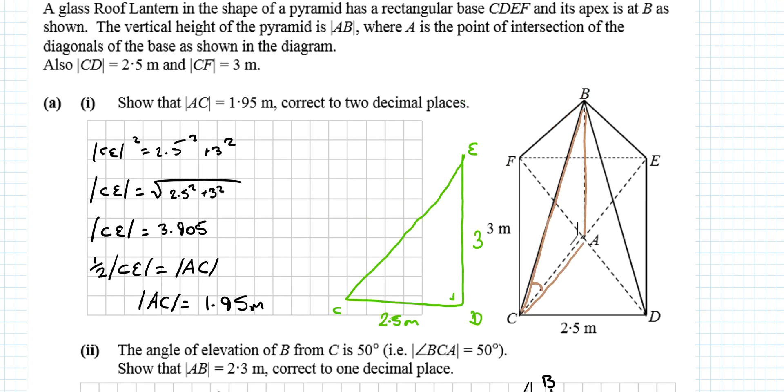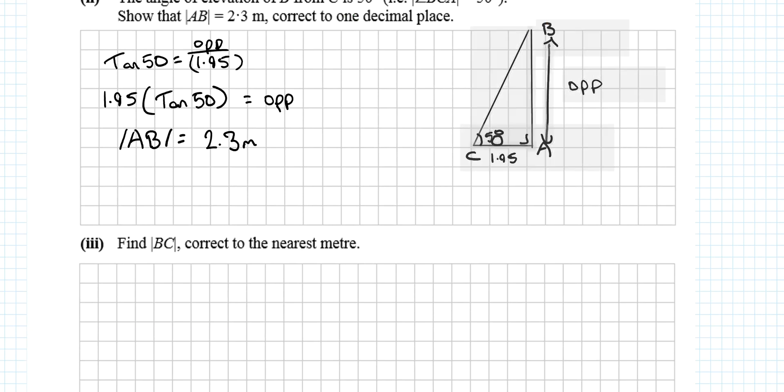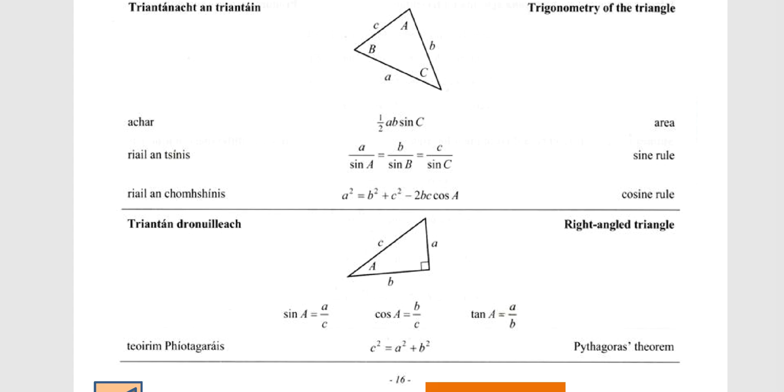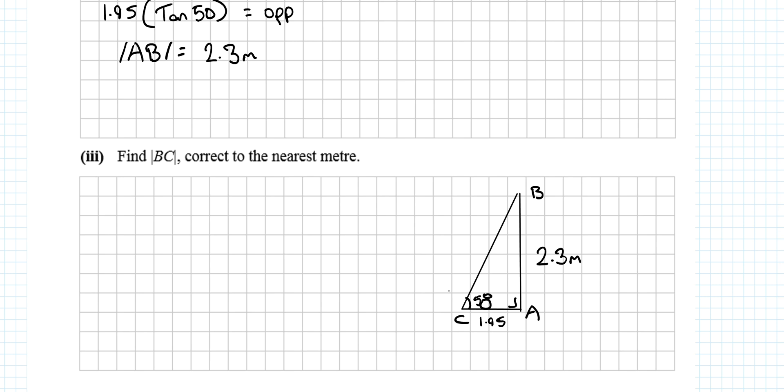Find BC correct to the nearest metre. BC is this length here, so we use the same triangle. I now know BA was 2.3 metres. It's a right angle triangle - what rules can I use? Sokotoa or Pythagoras. I know 2 lengths and I'm looking for the hypotenuse. BC squared equals 1.95 squared plus 2.3 squared. Square root the whole thing and put it all into the calculator together. BC ends up being 3 meters to the nearest meter.